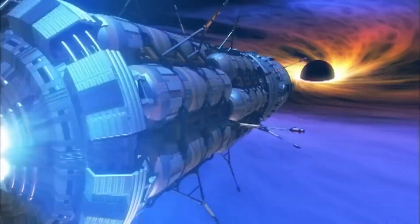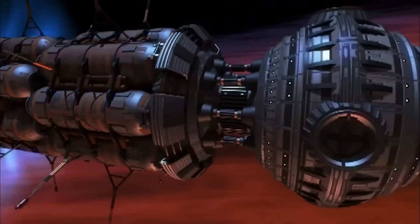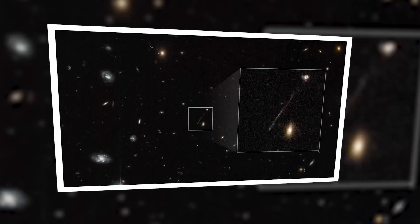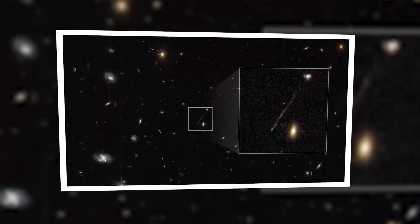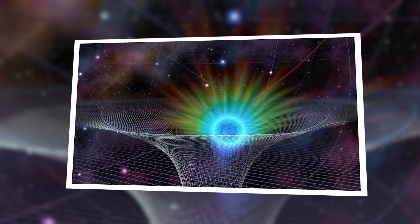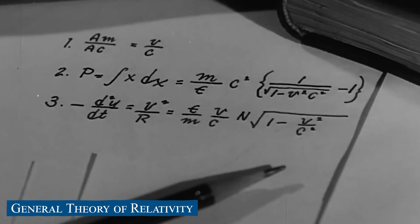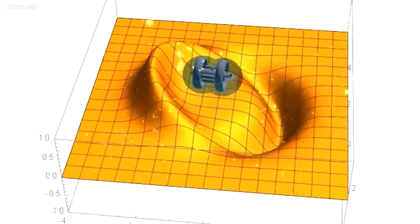It all started with a bold prediction made by English natural philosopher John Mitchell back in 1783. He theorized that there might be invisible objects in space with intense gravity fields that could be detected through the orbit of a star. However, it wasn't until the publication of Albert Einstein's General Theory of Relativity in 1916 that the concept of black holes began to take shape.